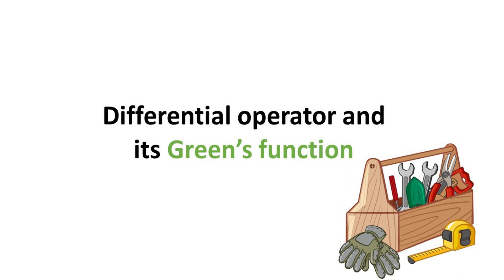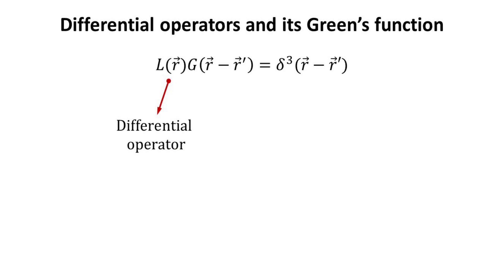We need to add one more trick into our toolbox, which is related to the concept of Green's function of a differential operator. Let's have a quick refresher on this topic. Given a linear differential operator in R, herein denoted by L, there exists a function which, when operated, yields the Dirac Delta function. We call this the Green's function of L.